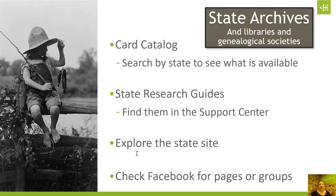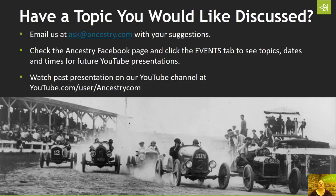Quick recap: Start on Ancestry, see what we have available — one to two million new records every single day being placed online. If you are interested in pursuing a particular brick wall on your family tree or you've run out of online resources, we've got those state research guides in the Ancestry Support Center with clickable links that will take you to the state websites for various repositories. You can explore those state websites and then look for ways — either on their website or on social media — to communicate with the staff at that archive about what kinds of records they have available and how best you can access those records.